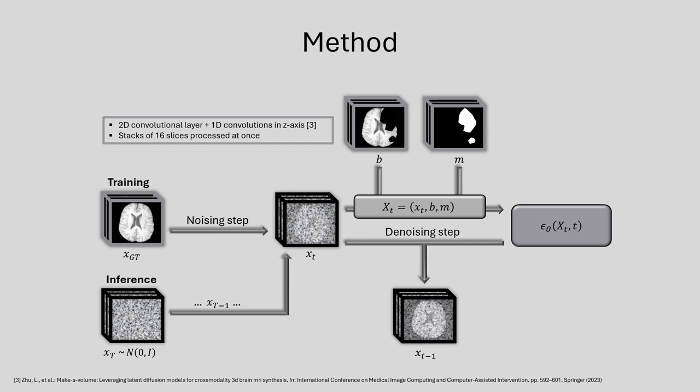During training, we consider stacks of 16 2D slices extracted from the 3D volumes of the training dataset. We use the ground-truth stack X_GT, a predefined mask M masking out some healthy tissue of X_GT, and the masked ground-truth stack B. A random time step T between 1 and 1000 is chosen and a noisy stack X_T is obtained by adding noise. The noisy stack X_T is then concatenated channel-wise with its non-noisy baseline stack B and the non-noisy mask stack M to include context information. This leads to a model input X_T consisting of X_T, B, and M. The model aims to predict a slightly less noisy image X_{T-1} computed via a denoising step.